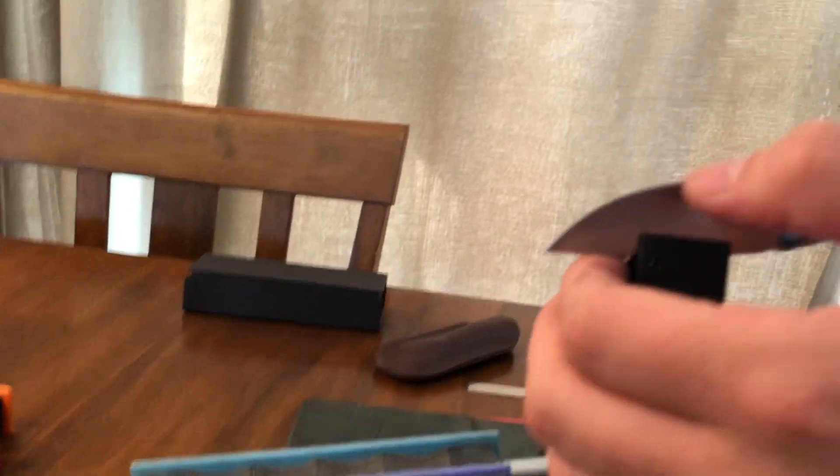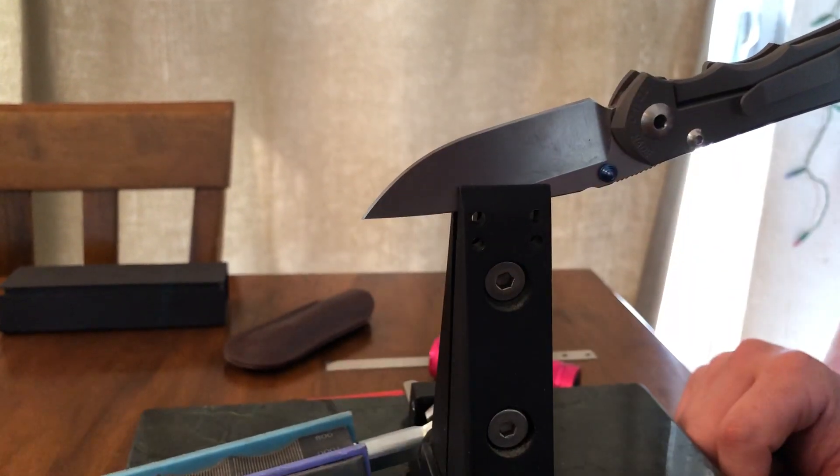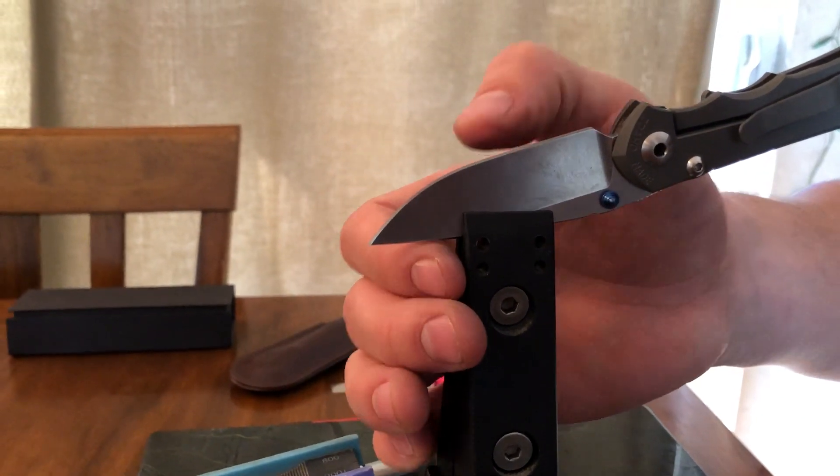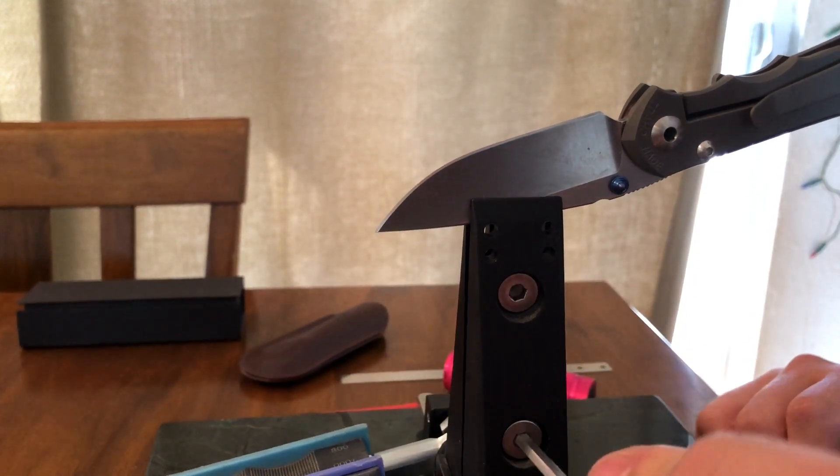All right and that's it. I'm basically done. I always check the edge just to make sure I didn't miss a spot or that it's as sharp as I want it to be before I remove it. That way I don't have to mess around with clamping it. This edge feels perfect to me, it's sharper than factory. Thanks for watching guys.